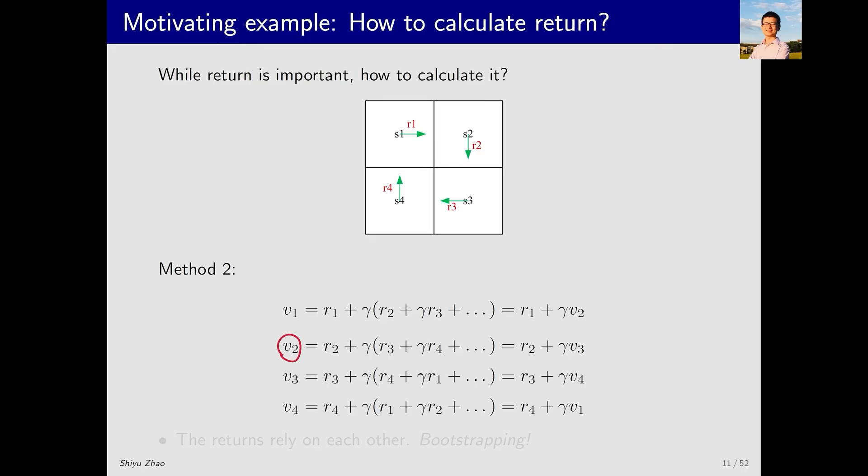What does V2 equal? It equals R2, an immediate reward, and then after moving here, it is gamma V3. I do not need to care about the subsequent trajectory. I know that after moving to S3, the return I will get is V3. Similarly, V3 equals R3 plus gamma V4 and V4 equals R4 plus gamma V1.